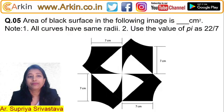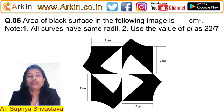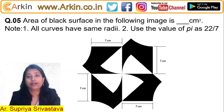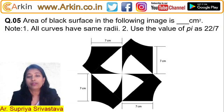Hello everyone, this is Supriya and today we'll be solving question number 5 of UC 2020. In this question we have to find out the area of the black surface. It's given that all curves have the same radii and you have to use the value of pi as 22/7.